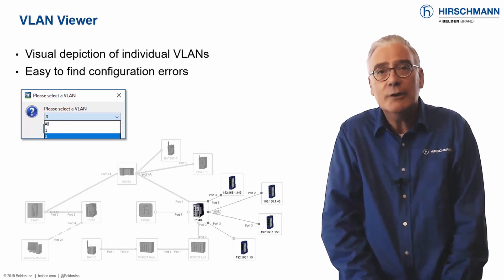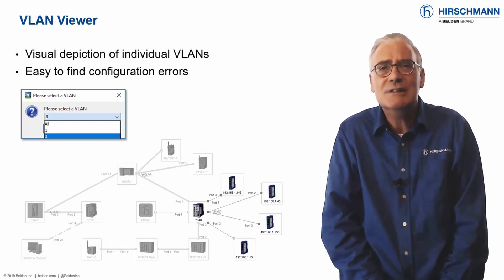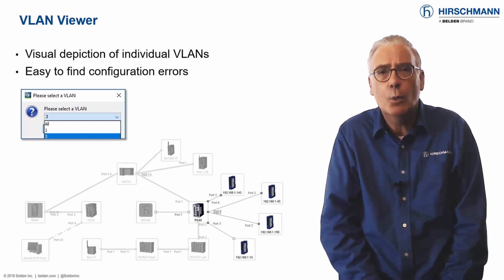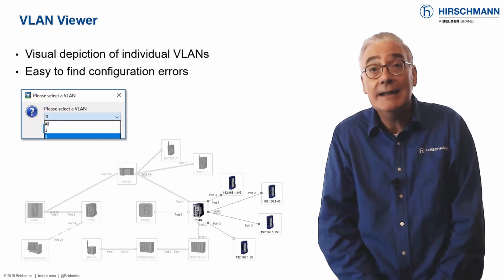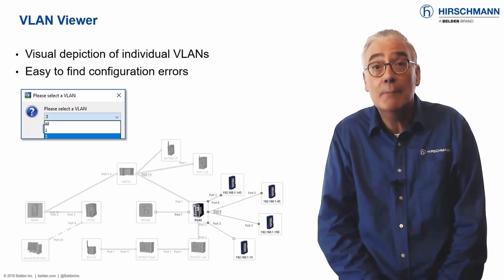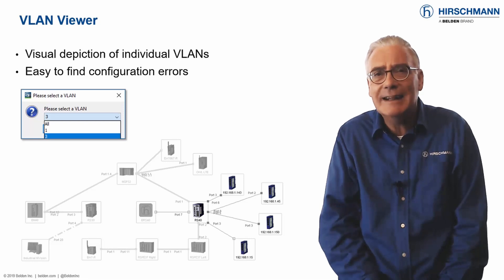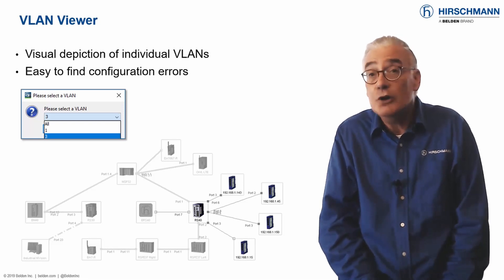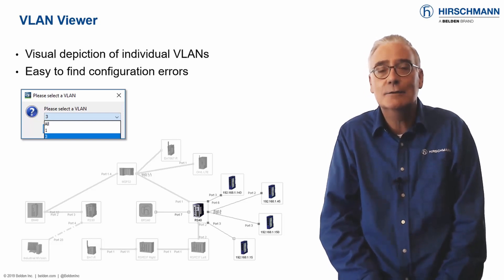Industrial HiVision can display a topology map per VLAN. This shows precisely which switches, connections, and end devices are members of a VLAN. Configuration errors are immediately obvious. If you use VLANs on your network, you need a tool like this.